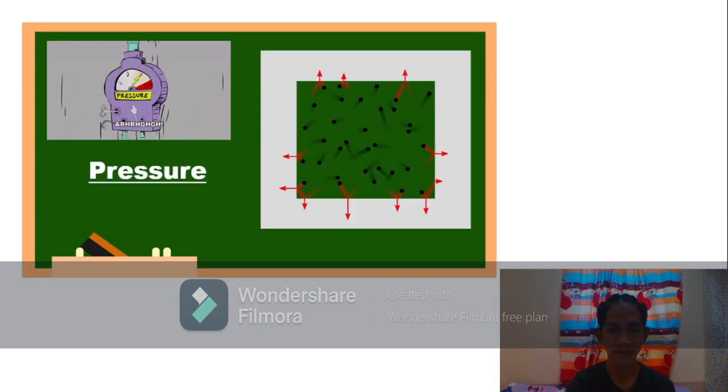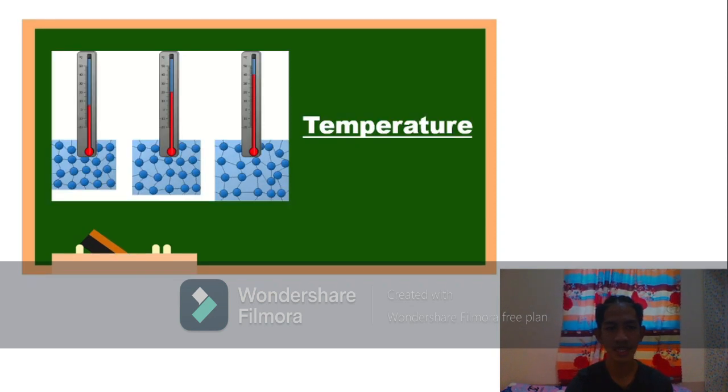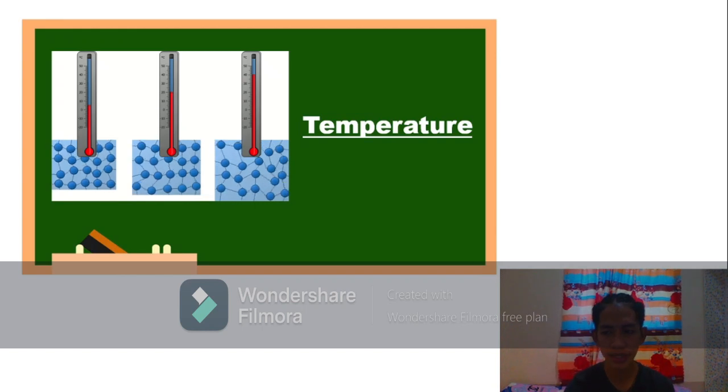First is pressure. Pressure is the force that the gas is exerting on its container, or how much the particles are hitting on the sides, like what the right picture tells us about. Second is temperature. Temperature is the amount of heat energy available to be transferred into kinetic energy. As the picture tells us, the higher the temperature, the faster the particles move.